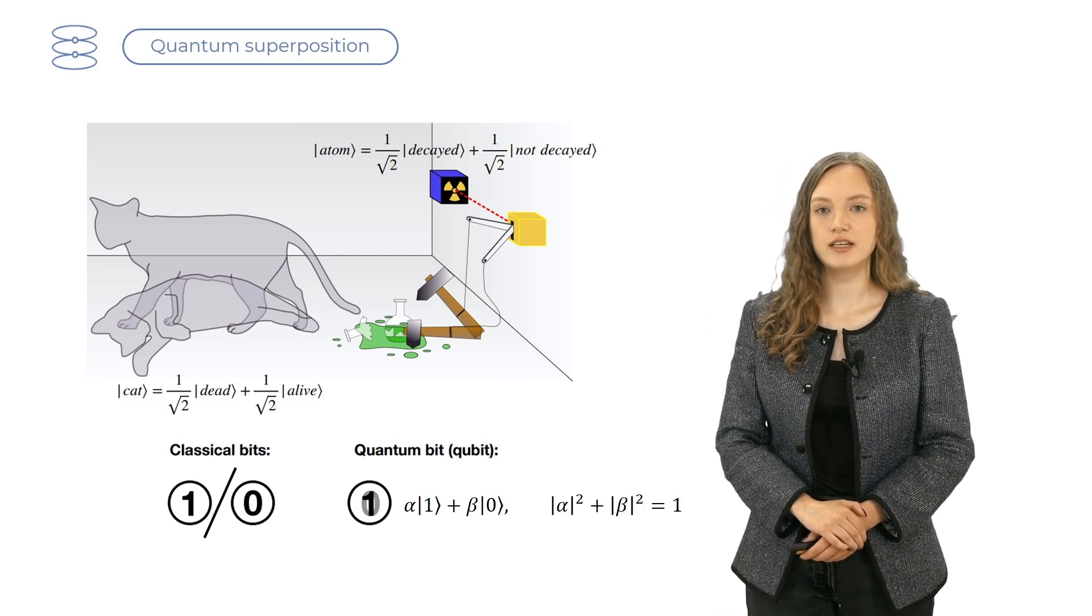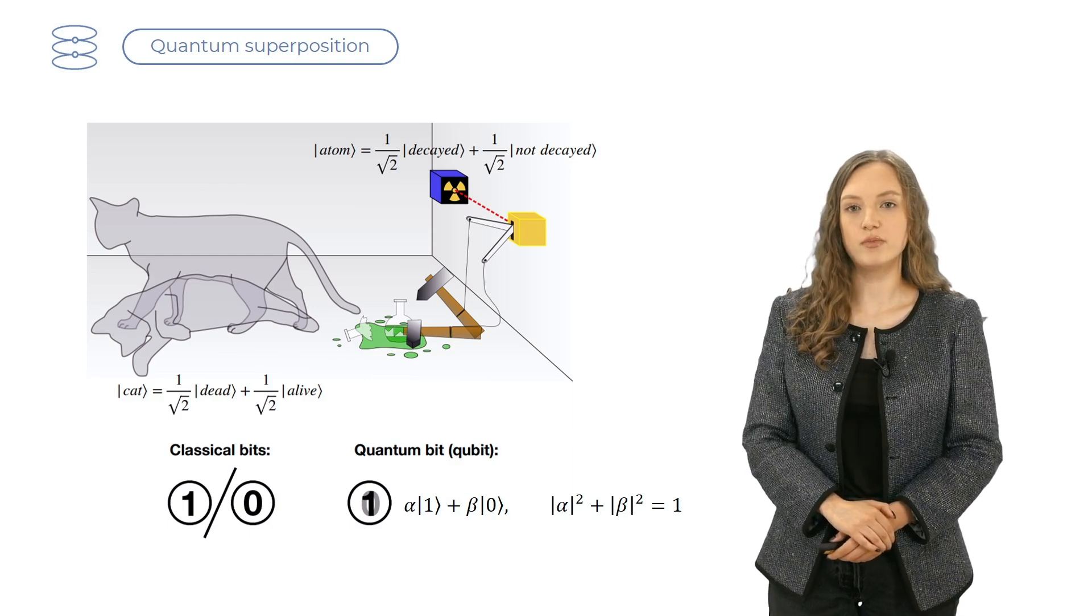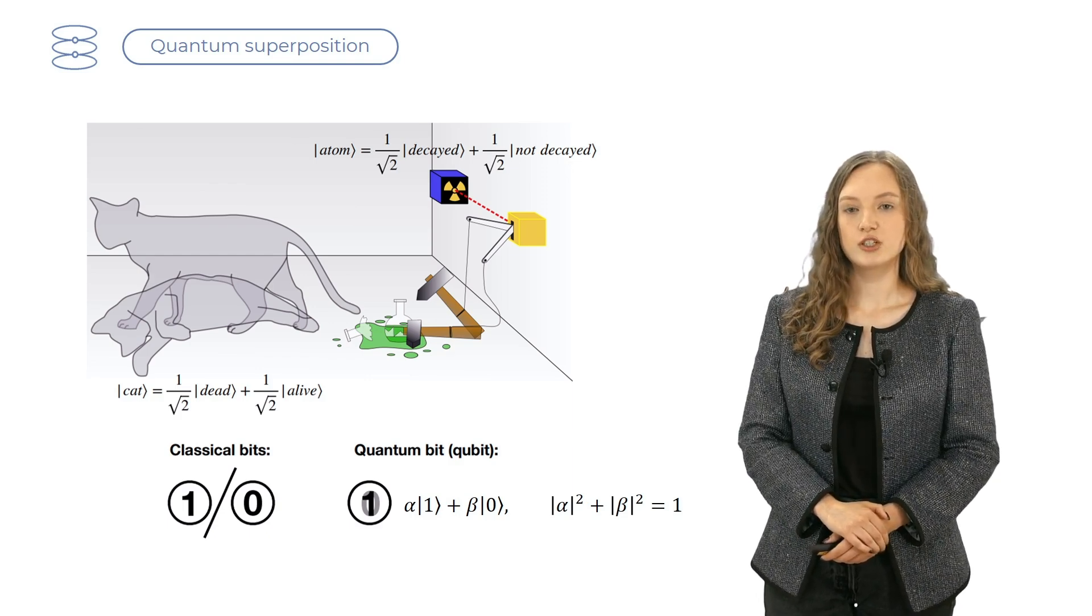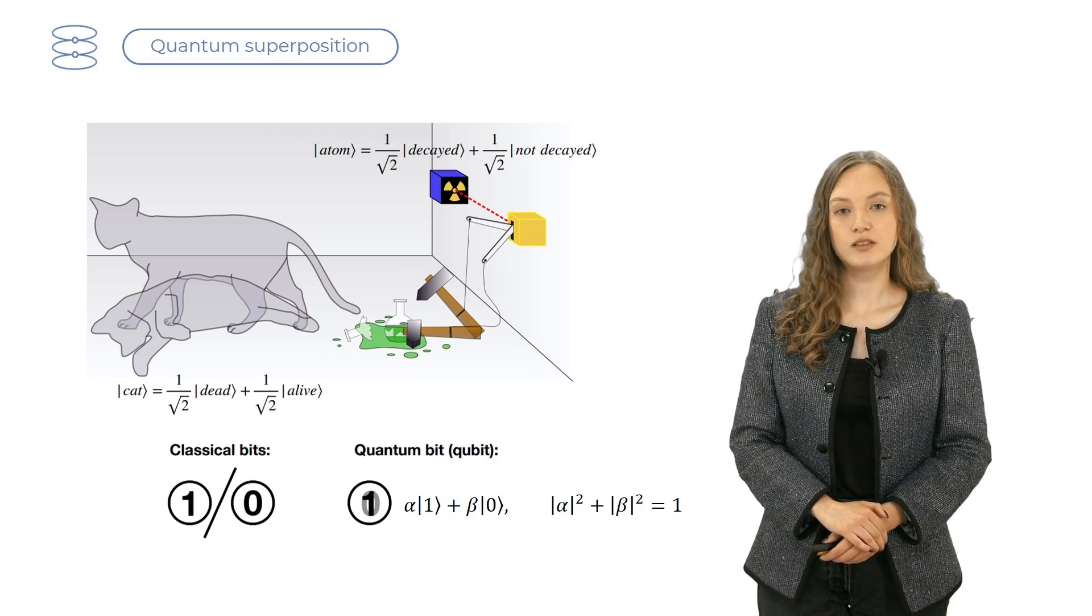Quantum computers, on the other hand, are precisely controlled systems. They can use quantum superposition to operate with quantum bits, which are superpositions of 1s and 0s instead of regular bits that are either 1 or 0.